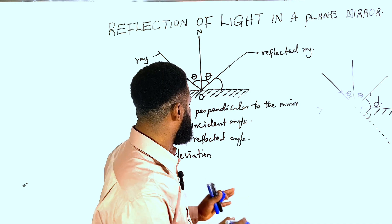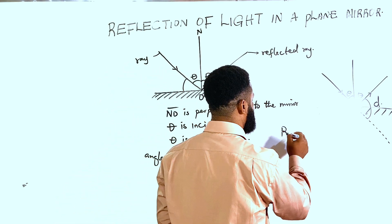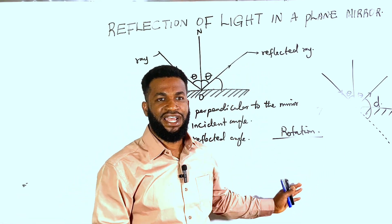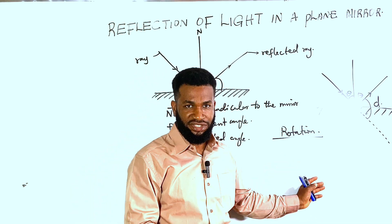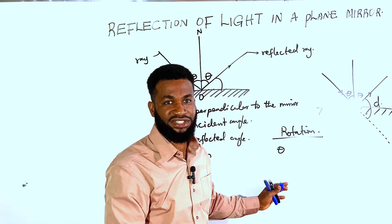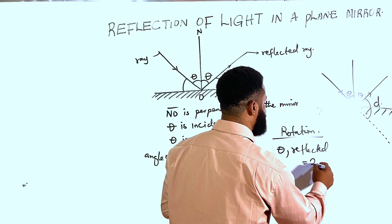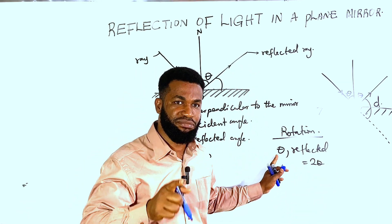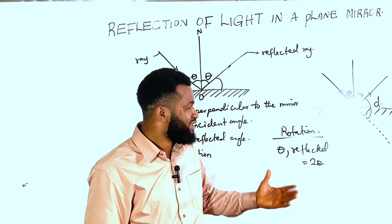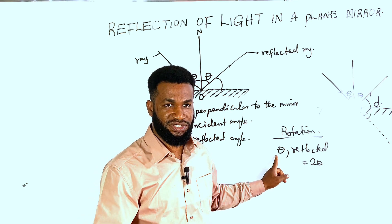We are going to solve a question to back up our principle. But before that, there is something about rotation of a mirror. If a mirror is rotated through an angle theta, the reflected ray is going to move through 2 theta — that is, two times the angle through which the mirror was rotated.